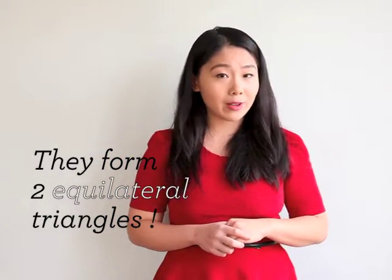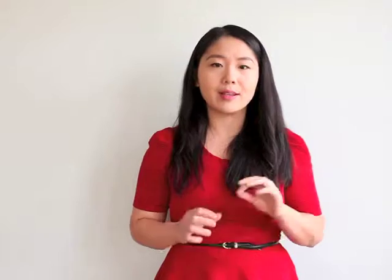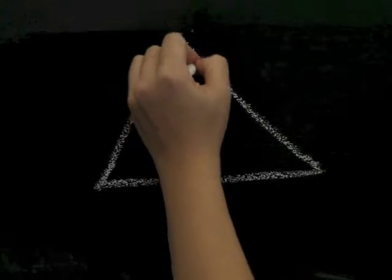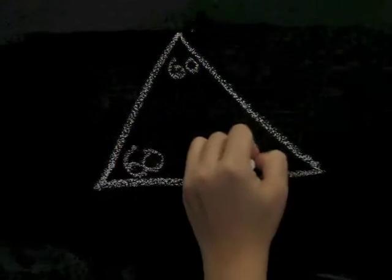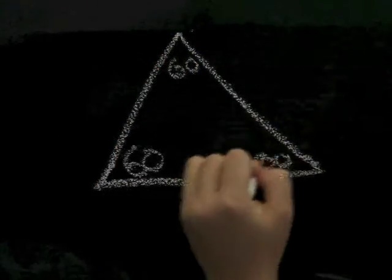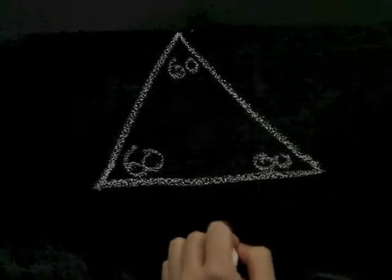The rule about equilateral triangles you must remember is that each angle equals 60 degrees, because all the angles add up to 180 and all the angles are equal.